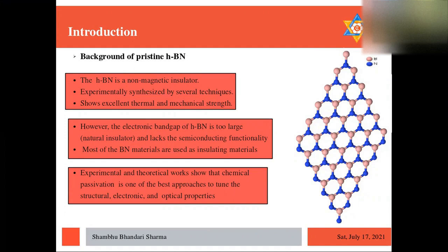However, the electronic bandgap of h-BN is too large. In fact, it is a natural insulator and it lacks the semiconducting functionalities. So most of the boron nitride materials are used as insulating materials.